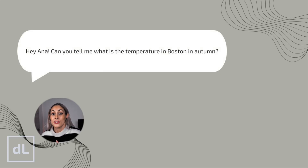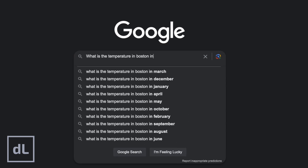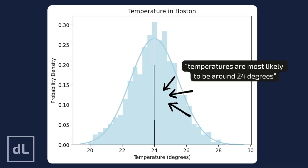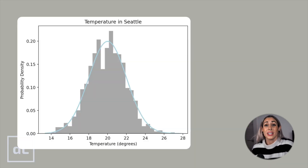To understand the correlation modeling approach, imagine you've booked a holiday to America in autumn and you want to know what the temperature is there. I know the temperature in Boston in autumn, but I won't tell you the exact value. Without additional information, you might check Google for the average fall temperature, and based on your general knowledge, you might assume a Gaussian distribution centered around 24 degrees — an educated guess that temperatures are most likely around 24 degrees, with fewer occurrences deviating significantly from the average. Now, shifting to Seattle on the other side of the country, you could estimate a slightly colder temperature, say 20 degrees, with a similar distribution.